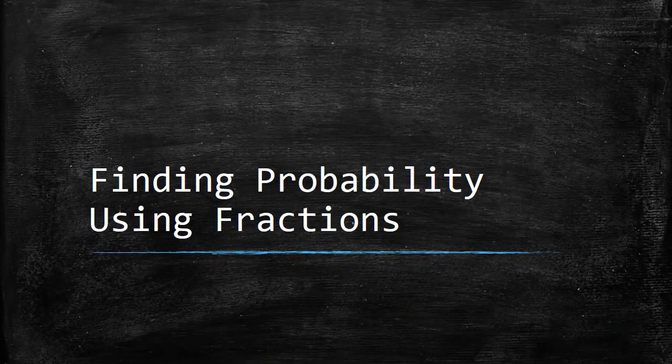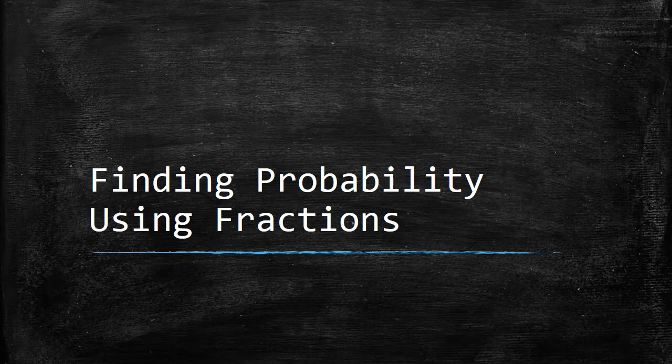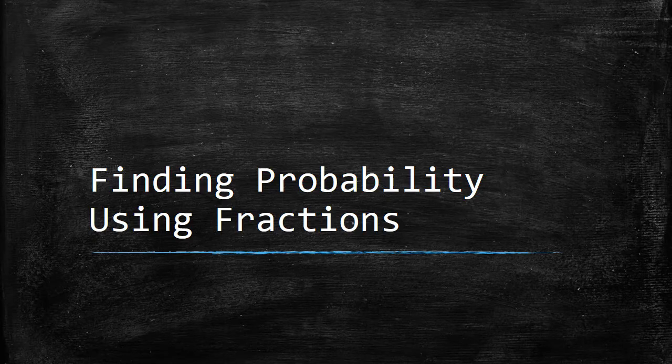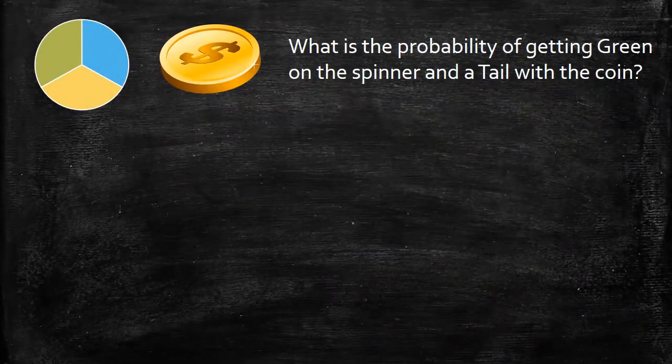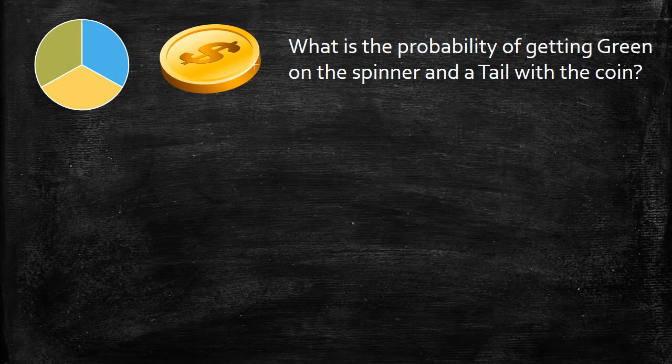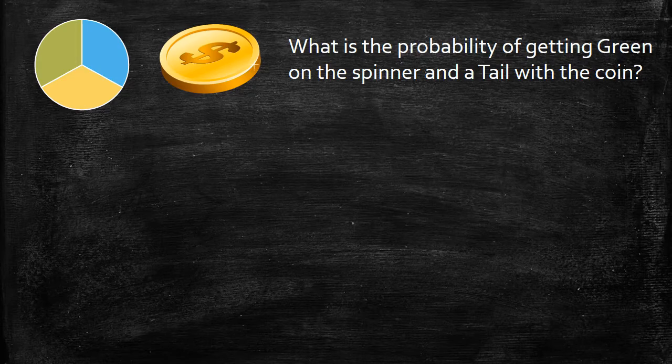Here we're going to take a look at how we can find probability using our knowledge of fractions and especially fractions multiplication. To start off, let's start with another example here. So we're going to look at finding what is the probability of getting green on the spinner and a tail with a coin.